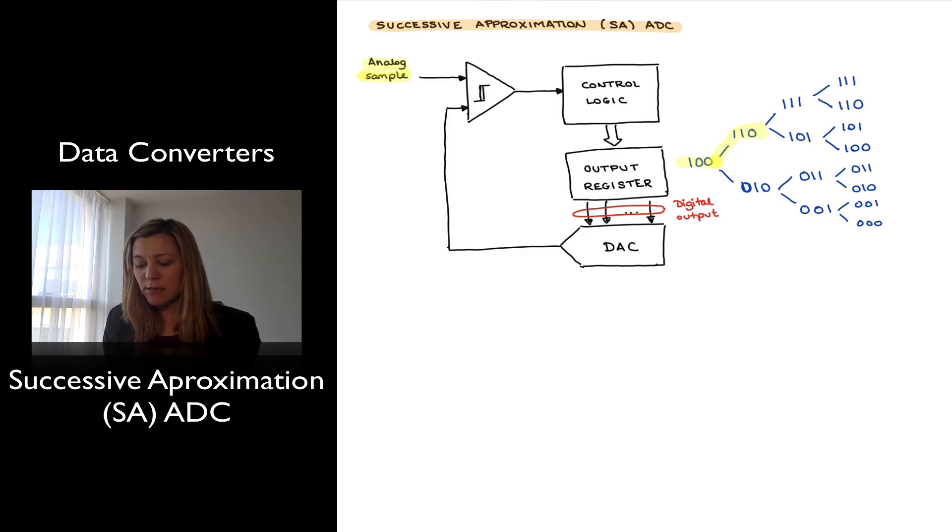If that quantity is larger than the analog sample, then I know that the opposite case is true. I need to go searching for quantities where my most significant bit is set to zero. So then I move on.